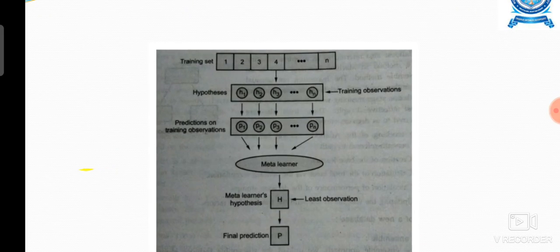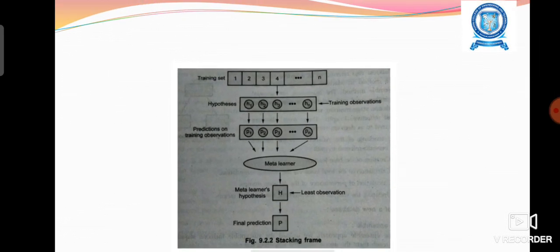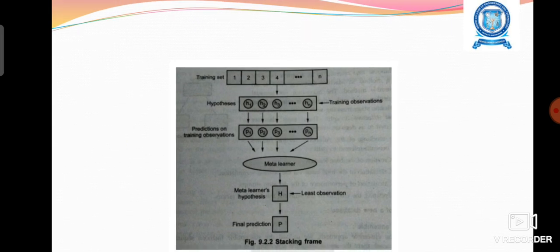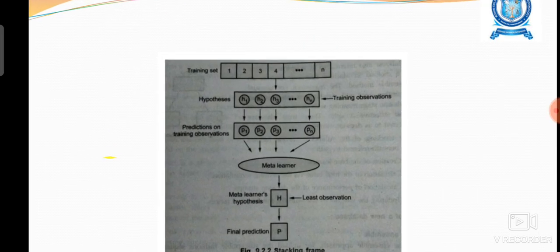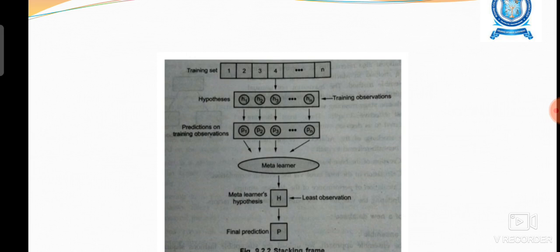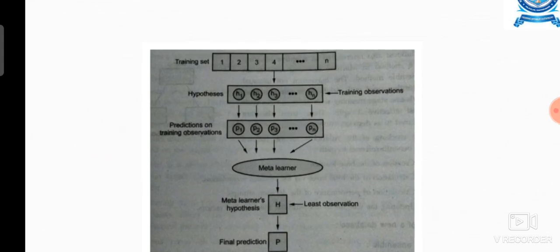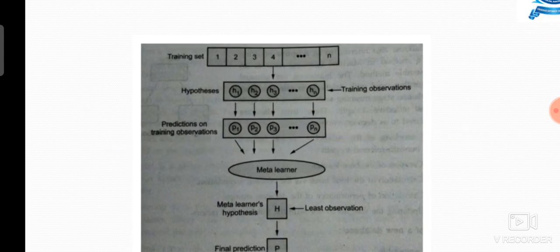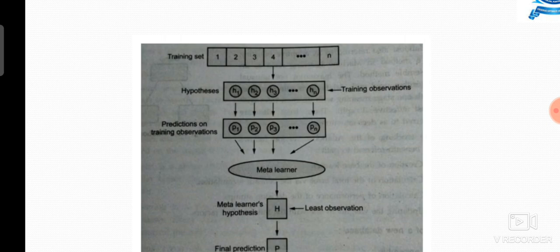This diagram shows the process of stacking. Initially the training dataset will be split and the hypotheses are produced by the different learners, that is hypothesis 1 up to hypothesis n. Each hypothesis corresponds to different individual datasets, n number of data subsets.